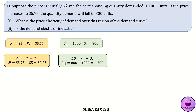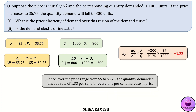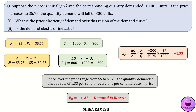The formula for calculating the price elasticity of demand is delta Q by delta P into P by Q. Substituting the values into this equation, we get the price elasticity of demand as negative 1.33. Hence, over the price range from $5 to $5.75, the quantity demanded falls at a rate of 1.33% for every 1% rise in price. Since the value of the elasticity of demand is greater than 1, we can say that the demand is elastic.